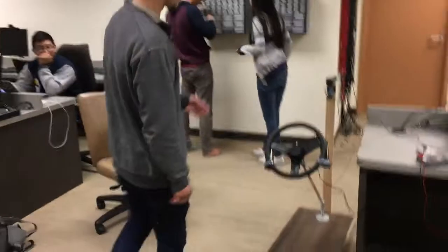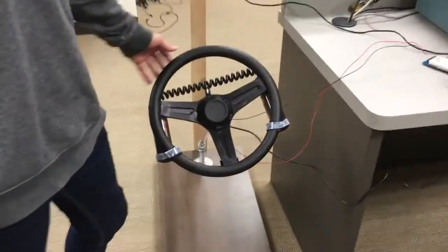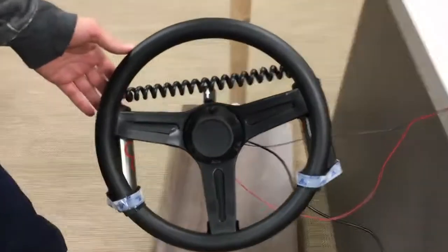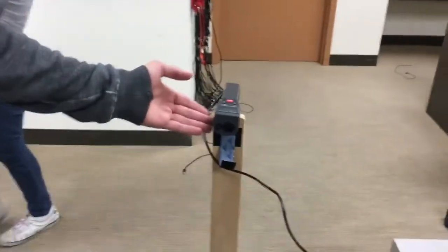Now let me show you the structure of our prototype. Here we have the main steering wheel and attached with it we have heart rate sensors. There's also a thermal IR sensor to detect temperature.